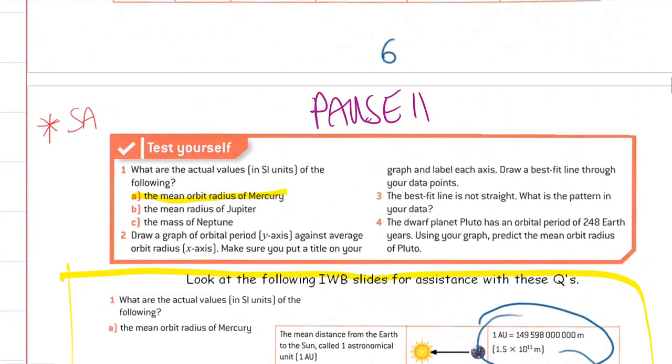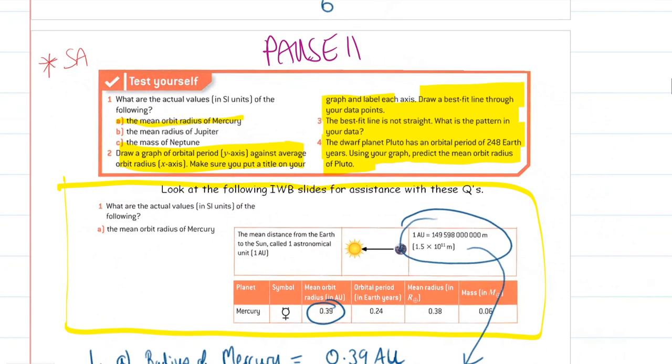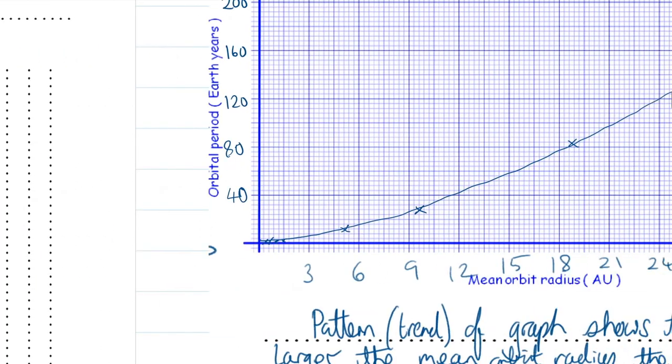If we look at questions 2, 3 and 4: draw a graph of orbital period against orbital radius, draw a best fit line through your points. Then 3: the best fit line is not straight, what's the pattern of your data? And finally, just telling us the dwarf planet Pluto, an ex-planet no longer a planet, has an orbital period of 248 earth years. That means it takes 248 times longer than earth to go around the sun. Can you imagine living on Pluto? Christmas once every 248 years. Let's look at what that graph would look like. This is a tough graph to plot, there's no two ways about it.